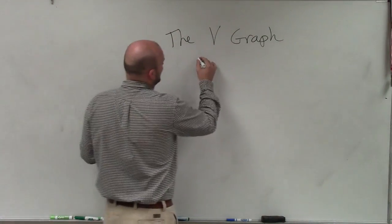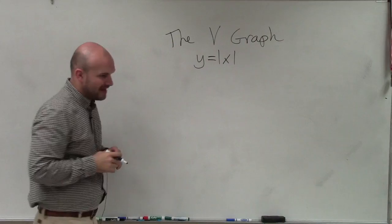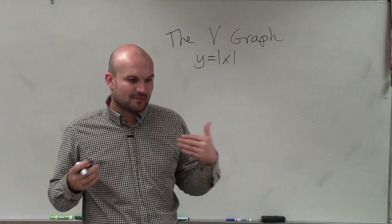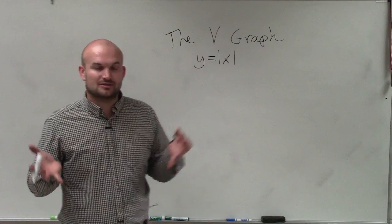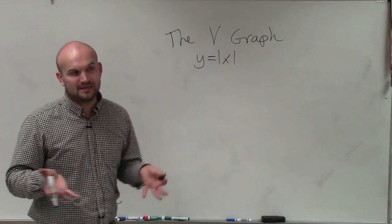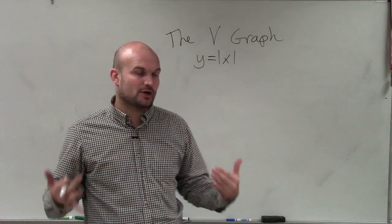And basically, the equation for our absolute value graph is y equals absolute value of x. So to understand what the parent graph is going to look like, I think it's easiest always to create a table and then a graph, and then we can go through the characteristics or just what exactly the parent graph looks like.